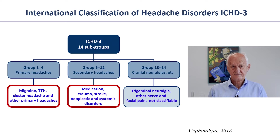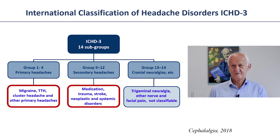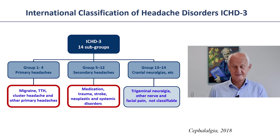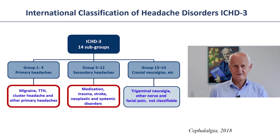The first thing to decide in classification work was how many different major groups of headache to accept. The division was first between primary headaches and secondary headaches, and then cranial neuralgias. Primary headaches are diseases in their own right — it doesn't mean we know nothing about their mechanisms, because we know an awful lot about the neurobiological mechanisms of headache. Secondary headaches are caused by another disease, trauma, drugs, or something else. Cranial neuralgia most often involves the trigeminal nerve or one of its branches.